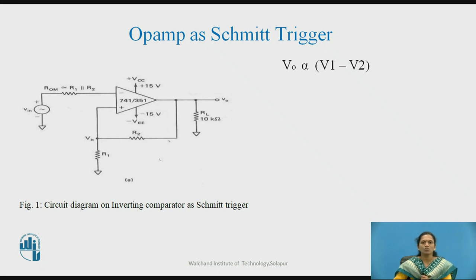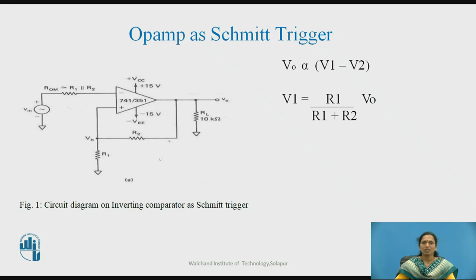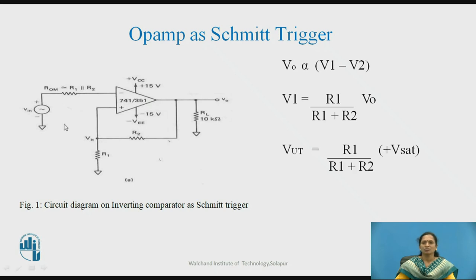The output voltage of the operational amplifier is the difference between the two voltages, V1 minus V2. As the reference voltage at the non-inverting terminal is V = R1/(R1 + R2) × V0, and as the input signal varies from 0 in the positive and negative directions, we can obtain two reference voltages: the upper threshold voltage VUT, calculated as R1/(R1 + R2) × (+Vsat).